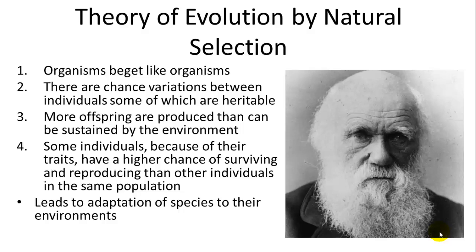Darwin took a lot of heat — it was very controversial when he came out with this theory. One thing he struggled with was how to come up with the mechanism of heritability: how were traits inherited?